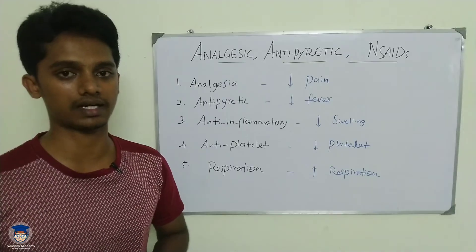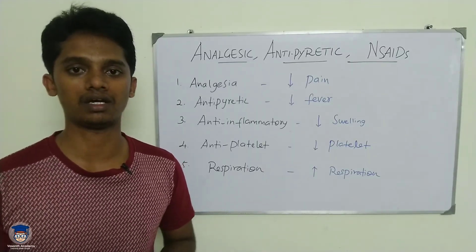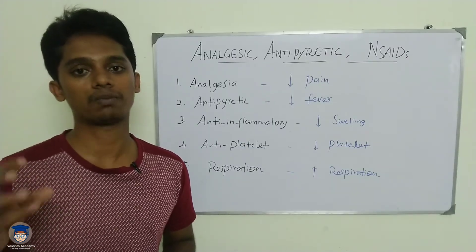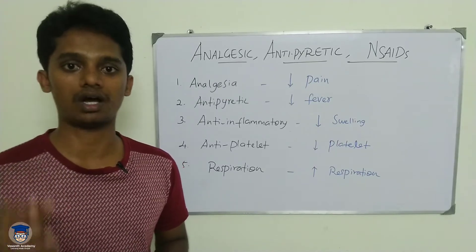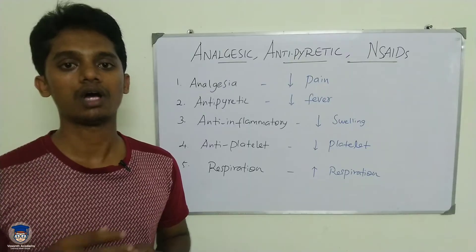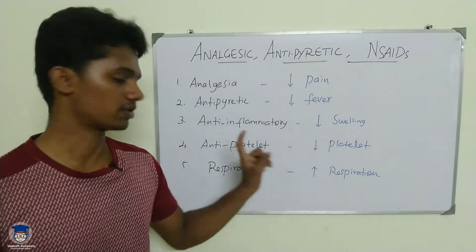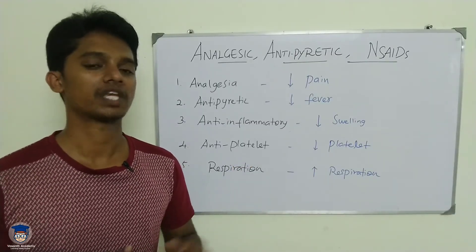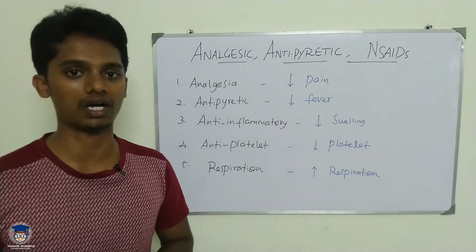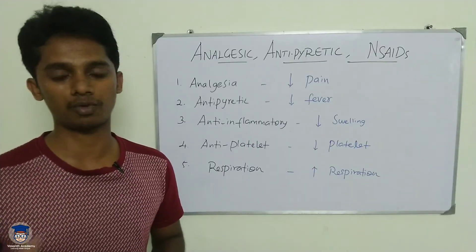In addition to the common actions, aspirin and sodium salicylate have additional anti-platelet action — they reduce platelet aggregation. In patients with ischemic heart disease, blood supply to the heart is reduced and blood clots (thrombus formation) can occur. By reducing platelet activity, aspirin prevents clot formation and helps maintain blood flow, making it useful in managing heart disease patients.